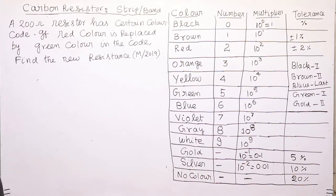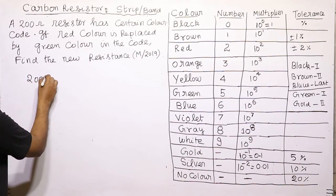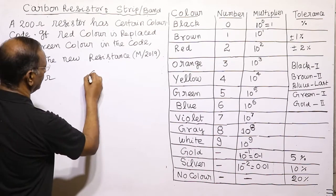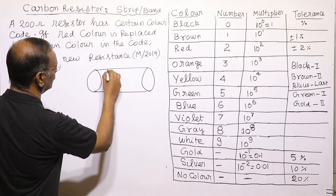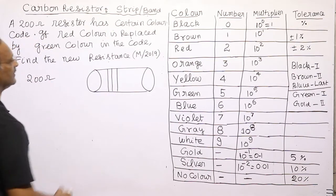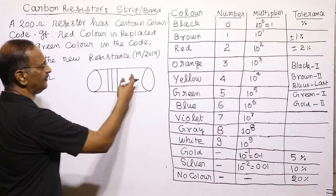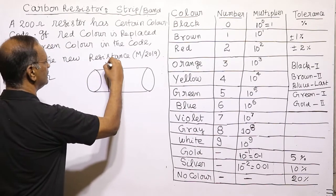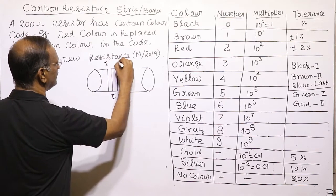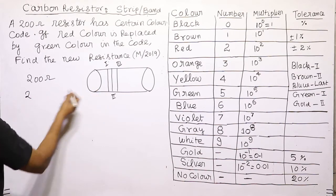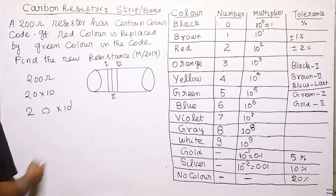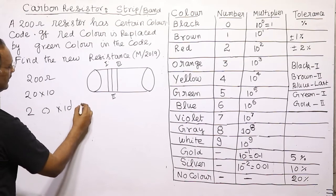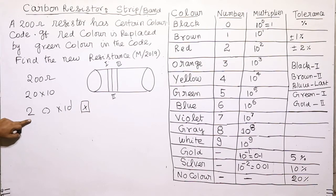A 200 ohm resistor has a certain color code. For 200 ohm, we will draw three bands. The value 200 can be written as 2 into 100, or 20 multiplied by 10 to the power 1. So we have first digit, second digit, and third digit as the multiplier. Tolerance is not given, so we will not worry about it.